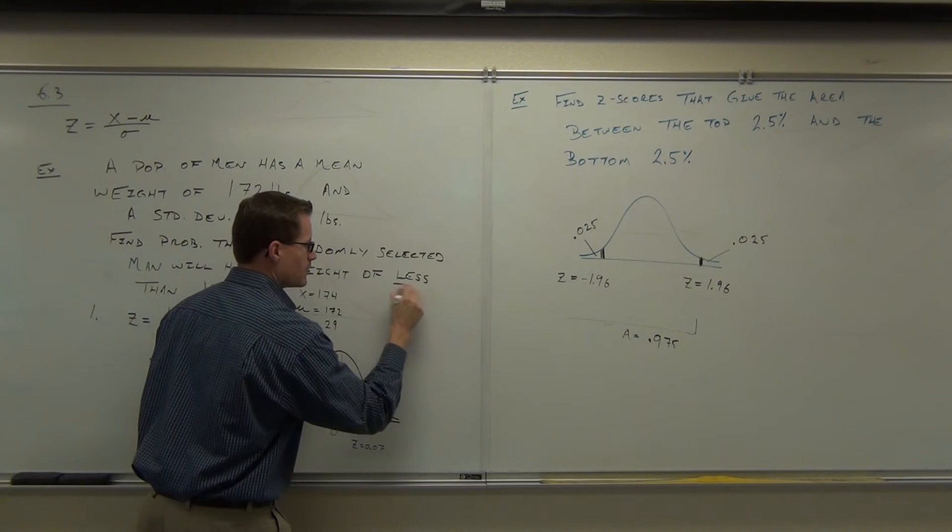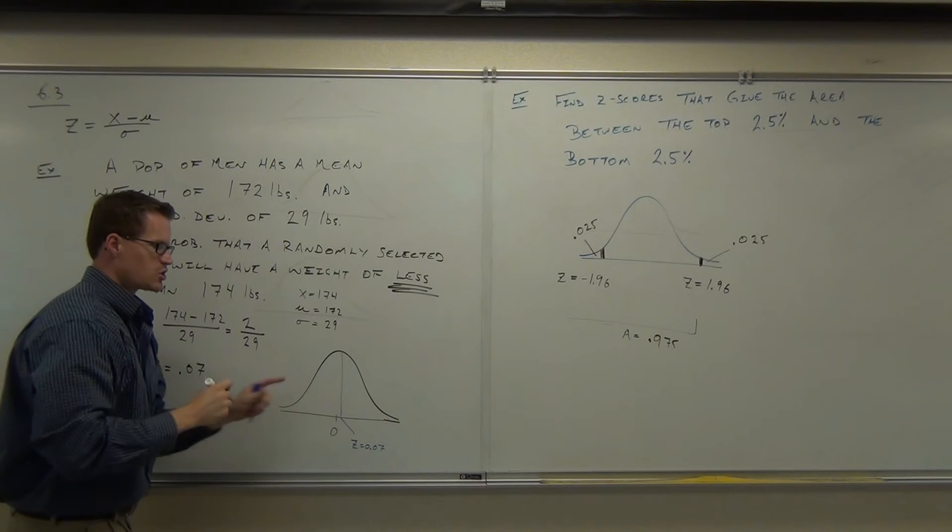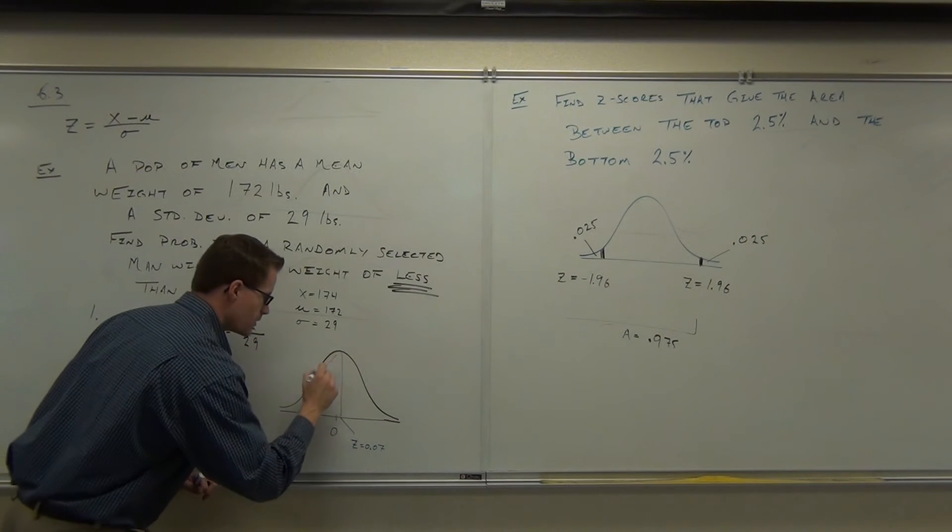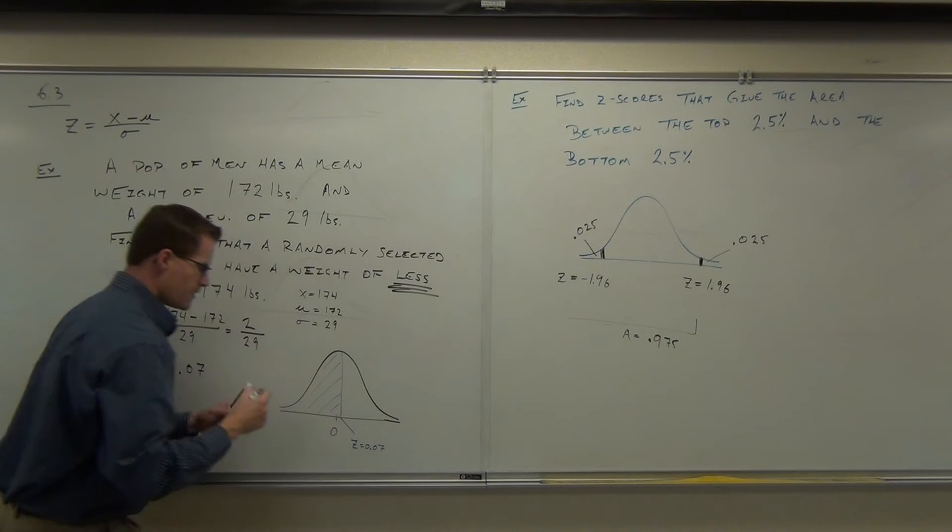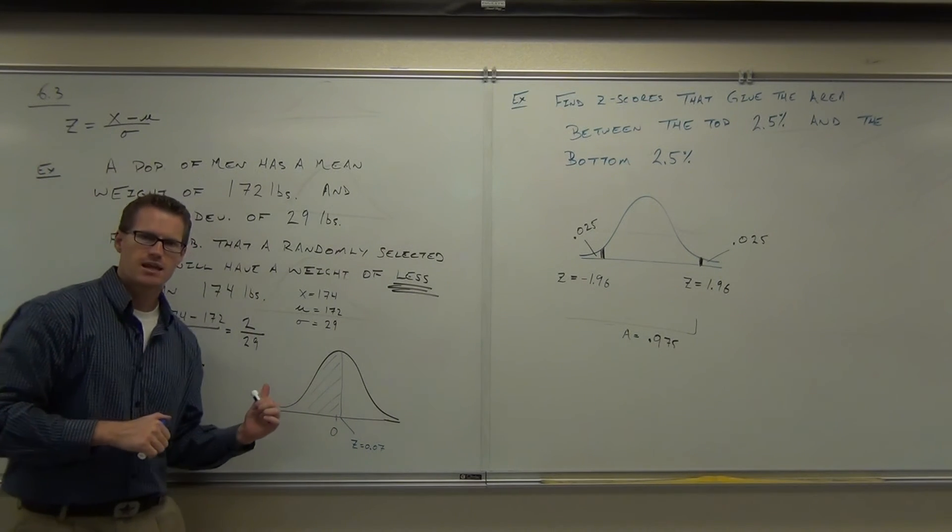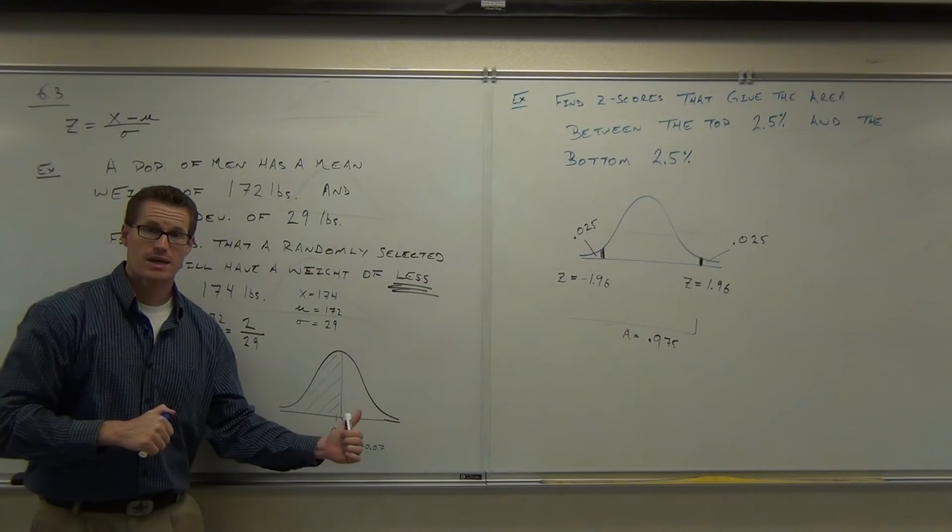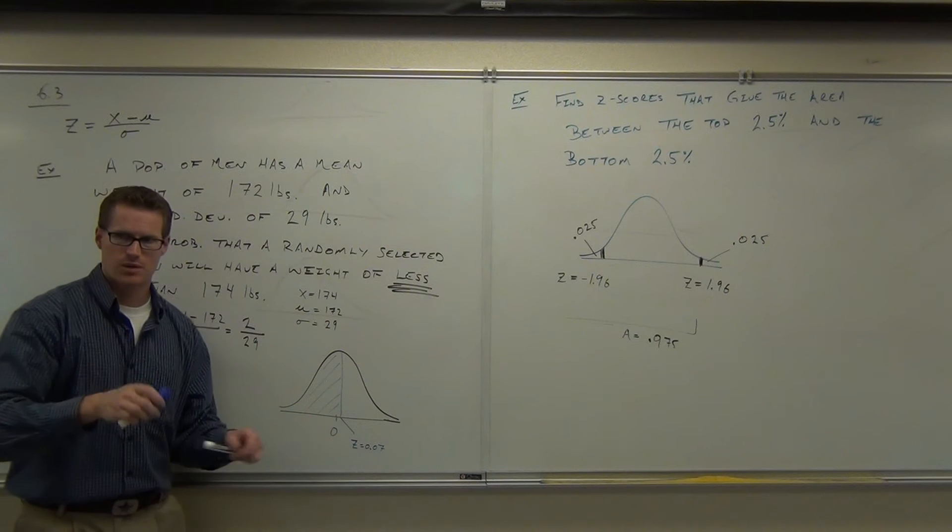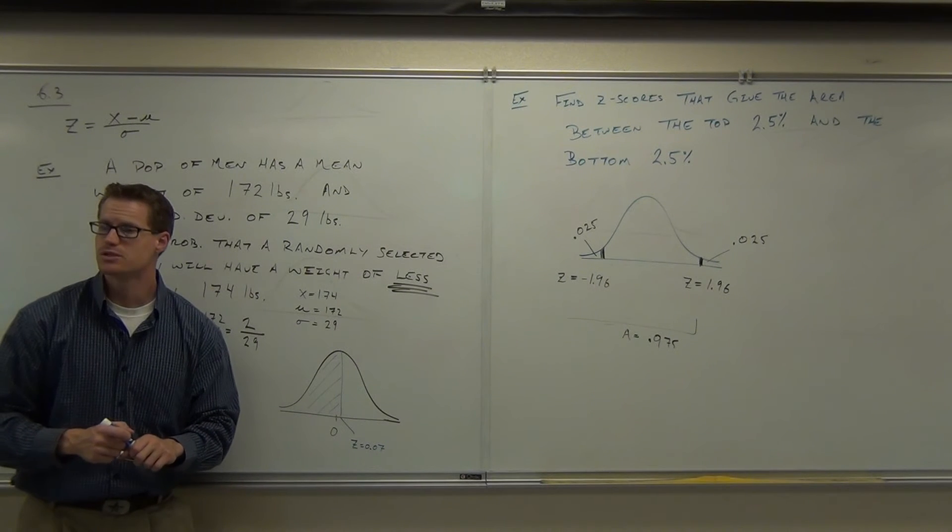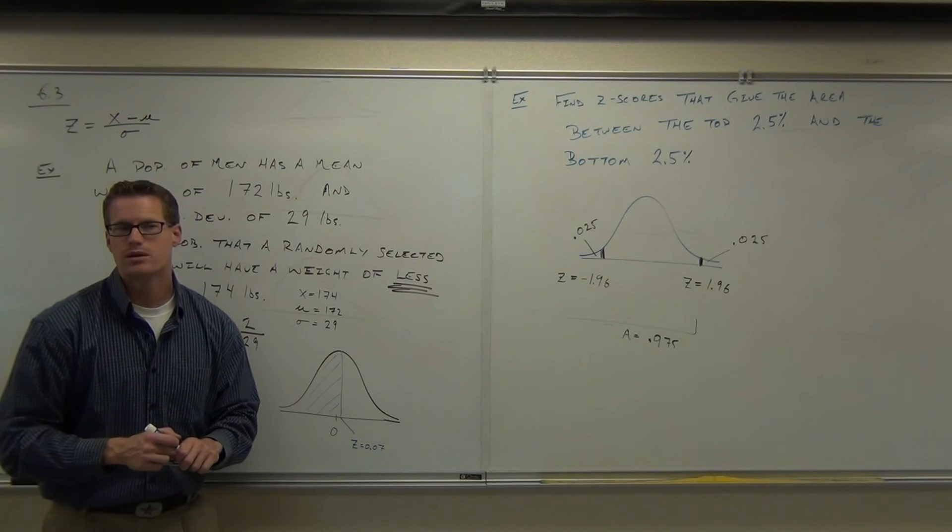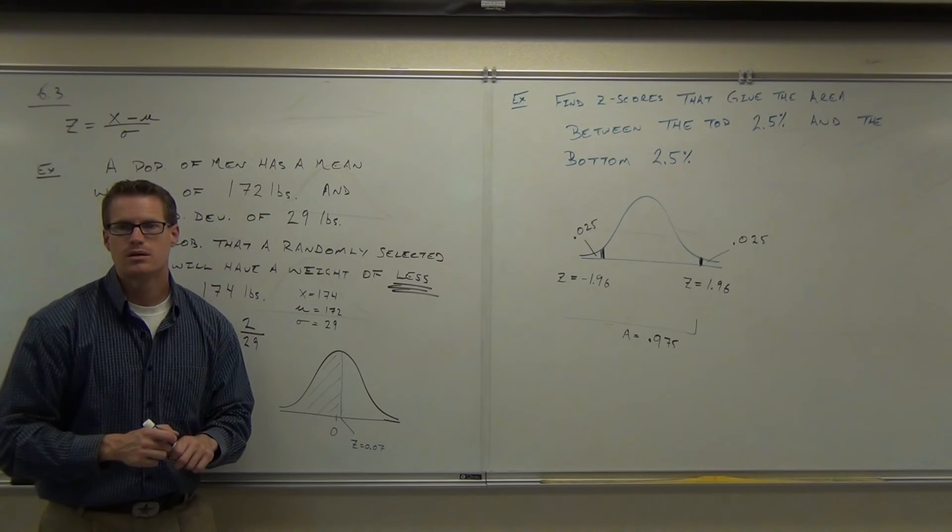We're looking for less than. Should I be shading to the right or to the left? Left. Less than, left. If I look up 0.07 on my table, if I plug in normalcdf(-10, 0.07) on my calculator, it's going to give me this area. What did you get? 0.47?